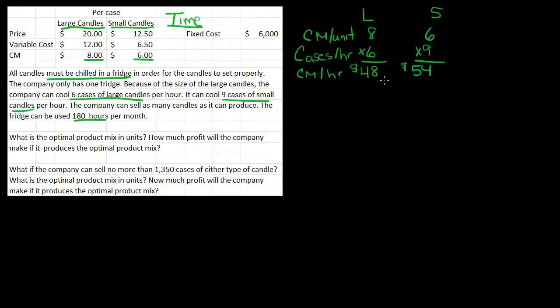So now if my goal is to maximize my profit, I want to make the units where I'm going to make $54 an hour. Because then I'll make more money in the 180 hours I have. So if I were going to make a product, I'm going to make the product that makes me the most money, which is small.